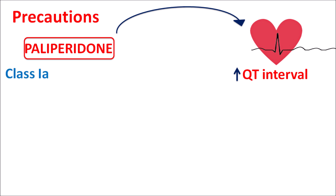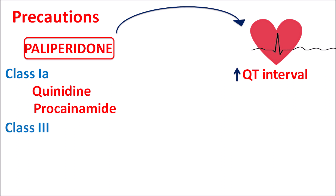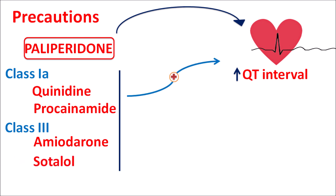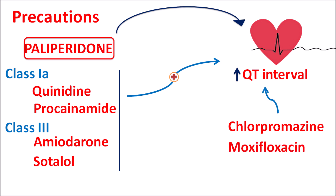Drugs that also prolong the QT interval — such as Class 1A antiarrhythmics like quinidine and procainamide, Class 3 antiarrhythmics like amiodarone and sotalol, antipsychotics like chlorpromazine, and fluoroquinolones like moxifloxacin — should not be combined with paliperidone, as the combination can produce fatal cardiac arrhythmias.